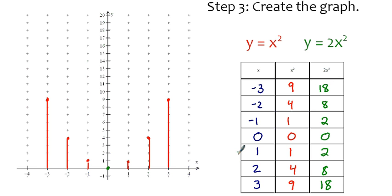So we're going to plot the ordered pair 1, 2. 2, 8. And 3, 18. On the other side we get negative 1, 2. Negative 2, 8. And negative 3, 18. Okay.